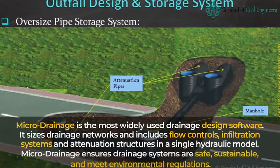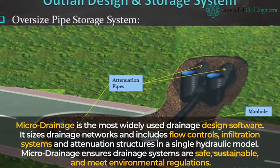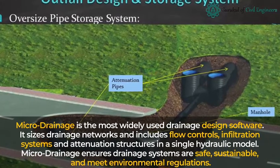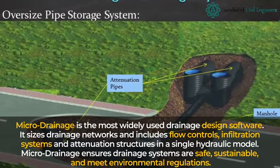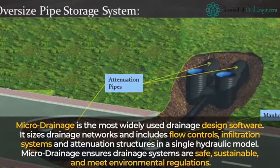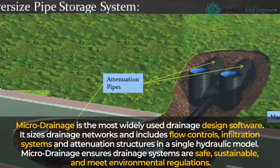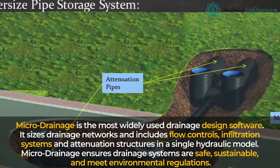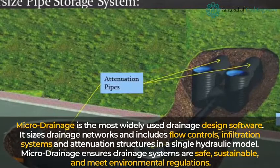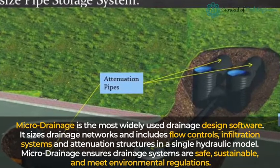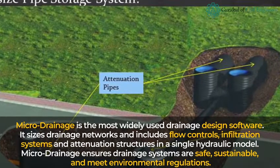Micro Drainage is the most widely used drainage design software. It sizes drainage networks and includes flow controls, infiltration systems, and attenuation structures in a single hydraulic model. Micro Drainage ensures drainage systems are safe, sustainable, and meet environmental regulations.